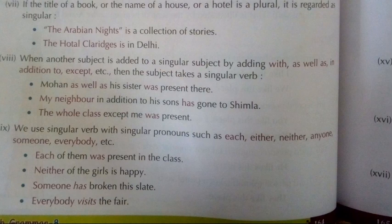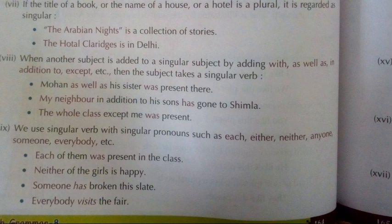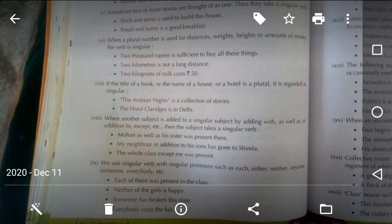Rule nine: we use a singular verb with singular pronouns such as each, either, neither, anyone, someone, somebody, everybody, no one, nobody. If any of these words appear in a sentence, treat them as singular. Examples: 'Each of them was present in the class.' 'Neither of the girls is happy.' 'Someone has broken this slate.' 'Everybody visits there.' 'No one is present in the school.'